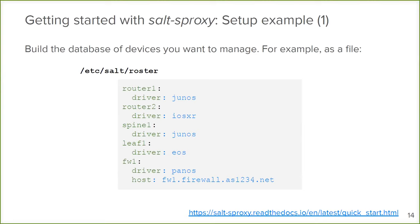The roster is pretty much the equivalent in the Ansible world of the inventory. It's just a database of devices with some properties. This Salt roster can be either a file - an SLS file, meaning it can be YAML, JSON, a combination of YAML and Jinja, or even a pure Python script if you want something more complicated - for example, if you want to retrieve the list of devices from an HTTP API. To keep it simple, I'll have it as a YAML file where I define a list of devices: router one as a Junos device, router two as IOS-XR, a spine as Junos, a leaf as Arista, and a firewall as Palo Alto.